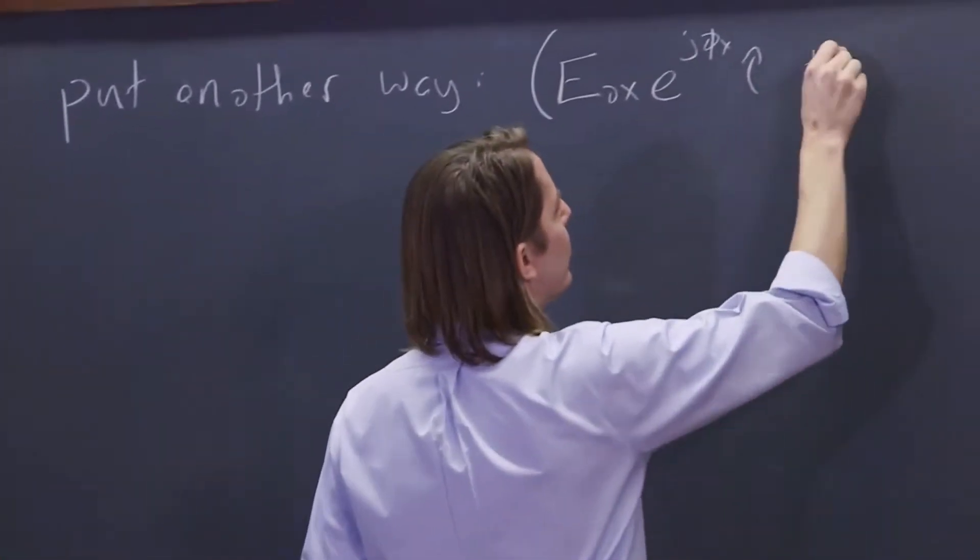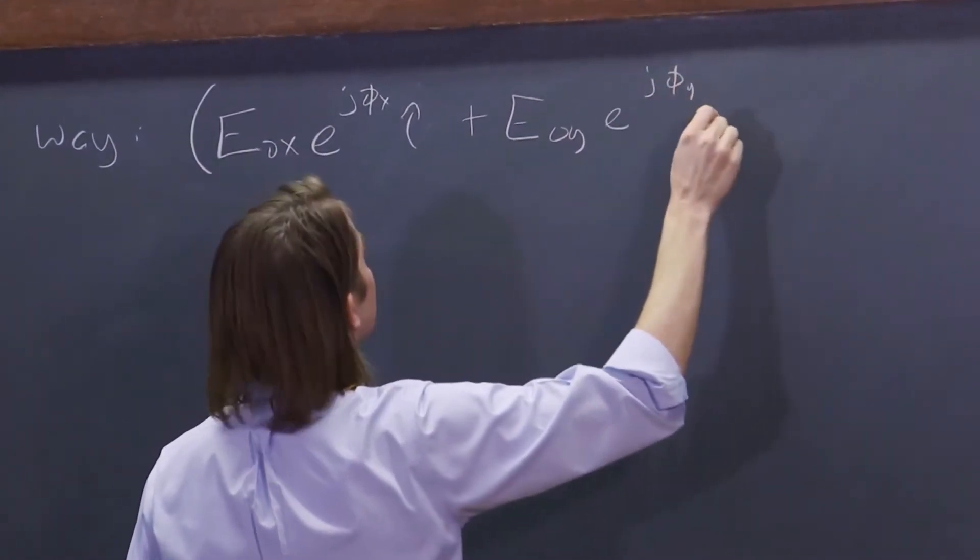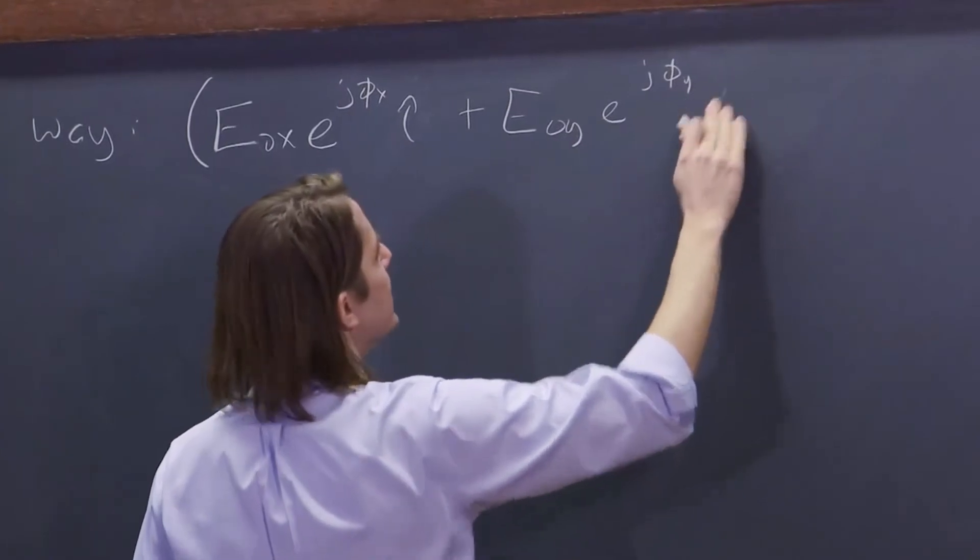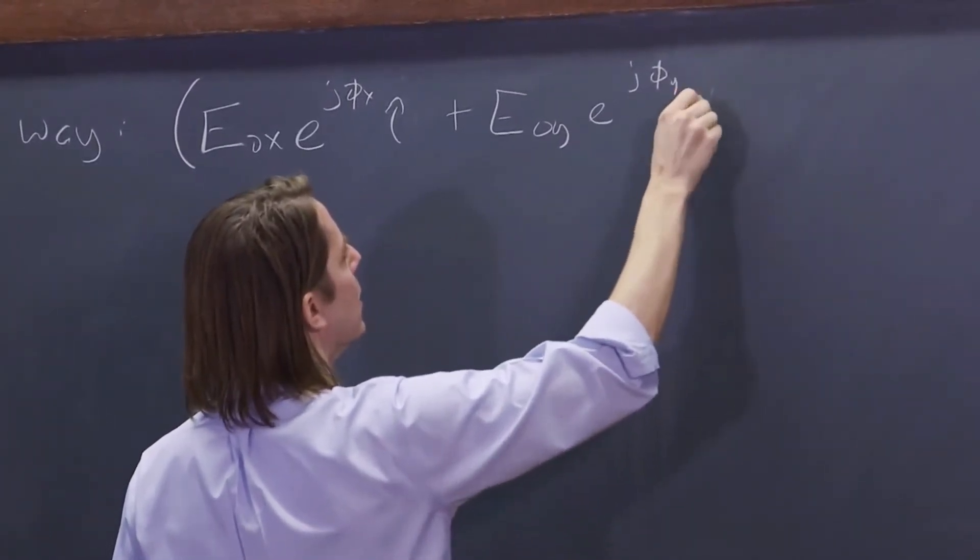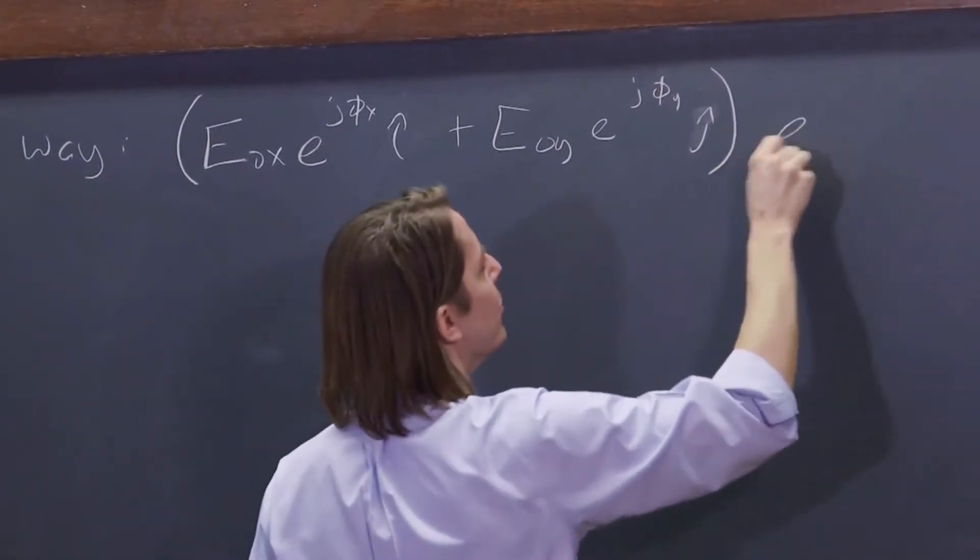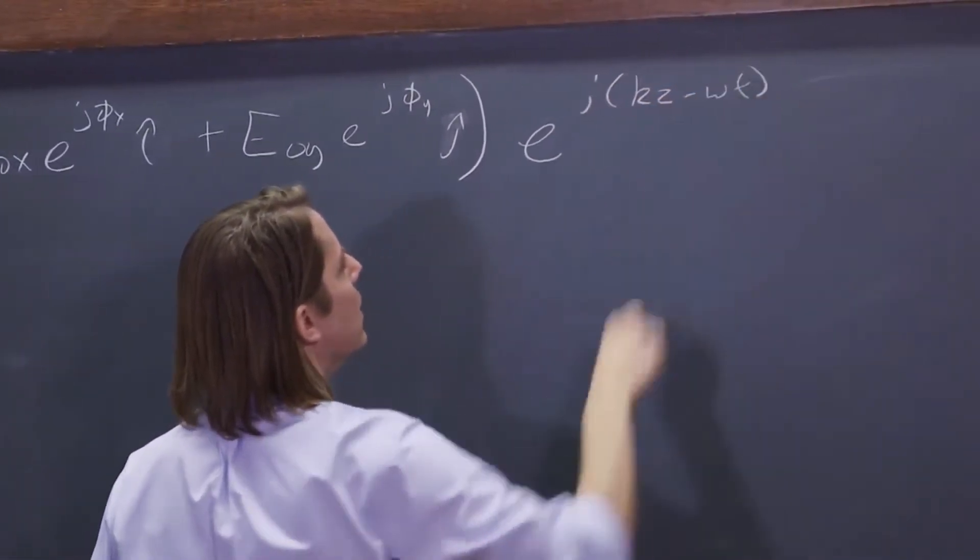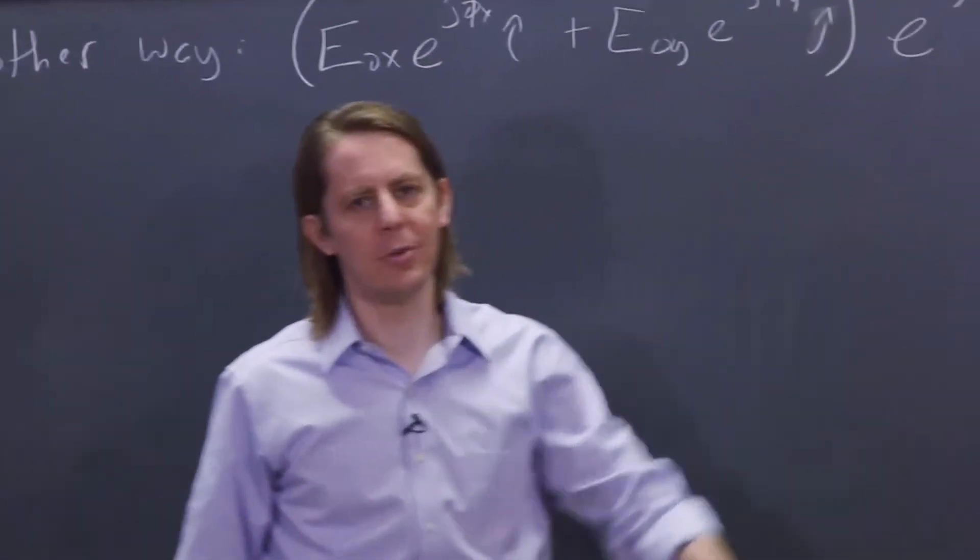And then the other term would be E naught Y, E to the J phi Y, J hat. And both of those would be times E to the J KZ minus omega T. So we're really just factoring out the common term.